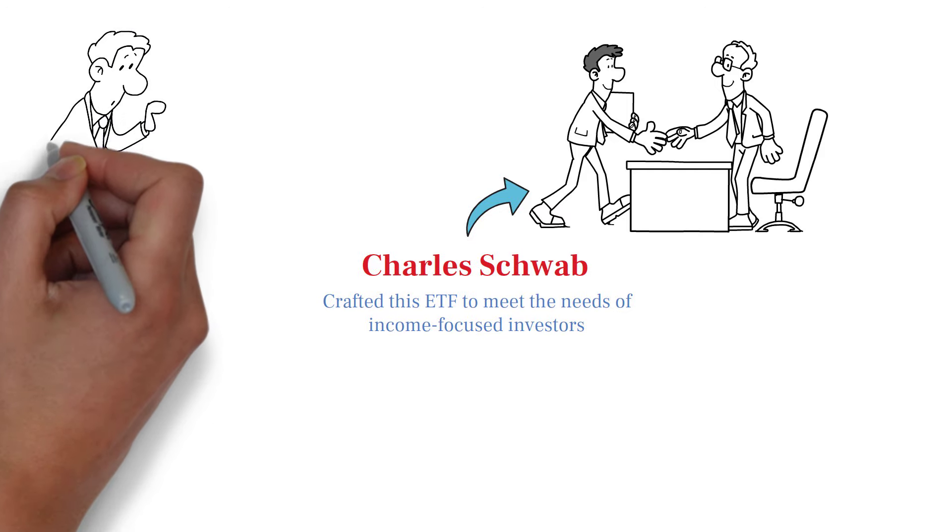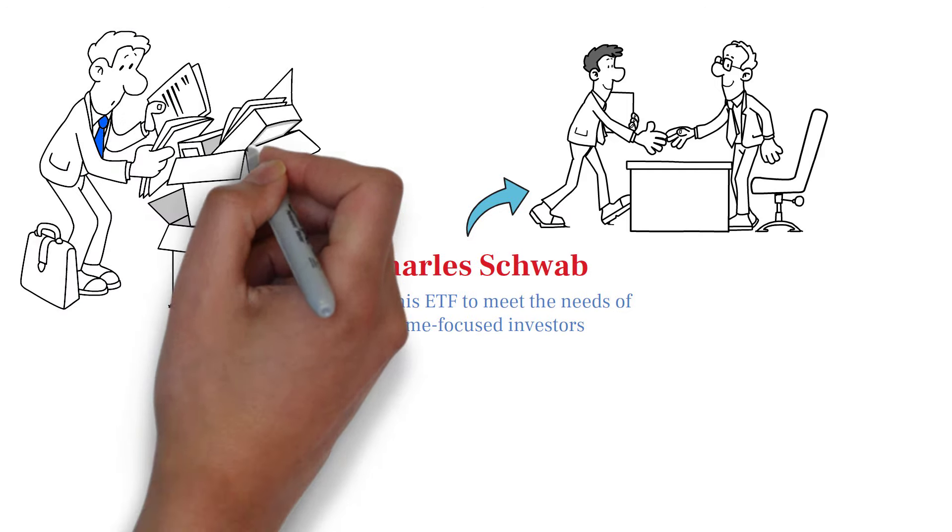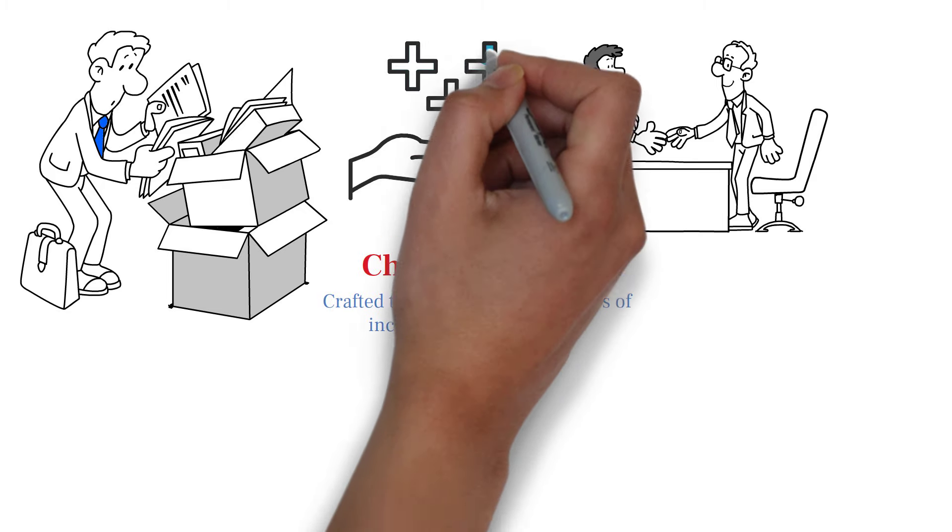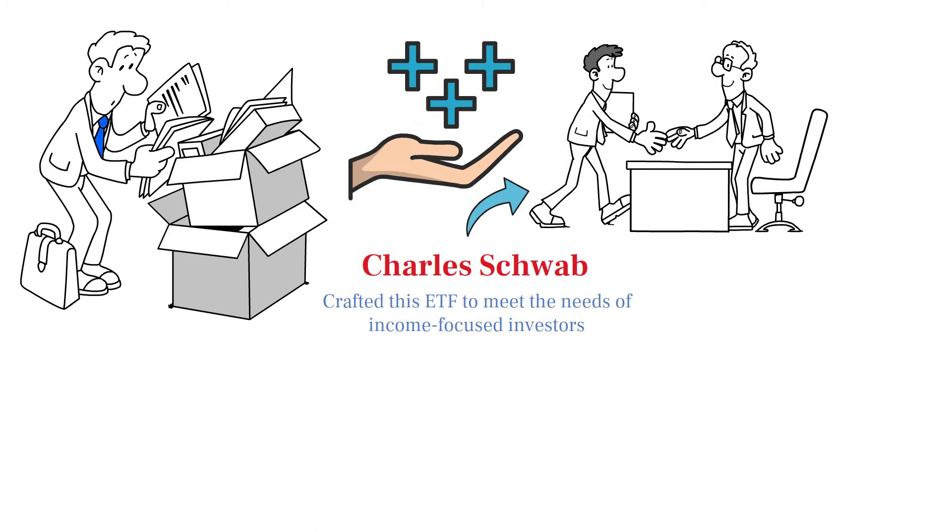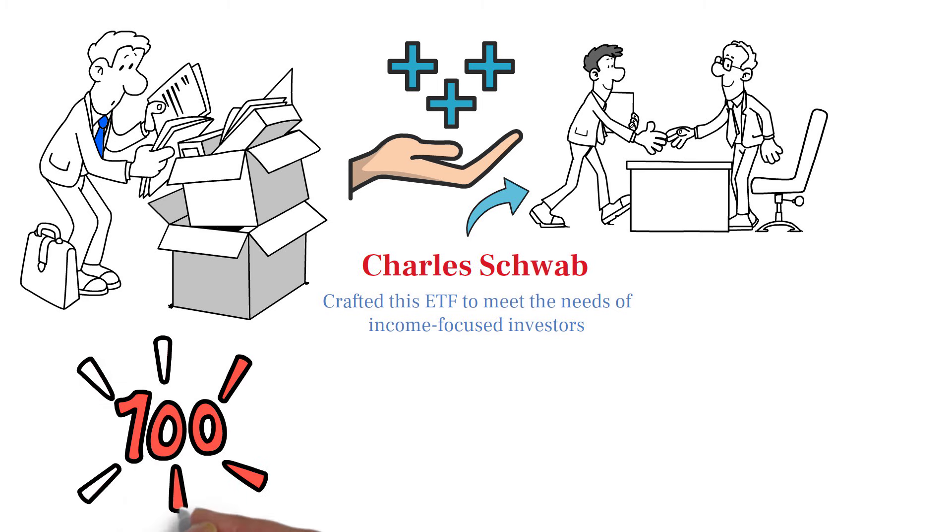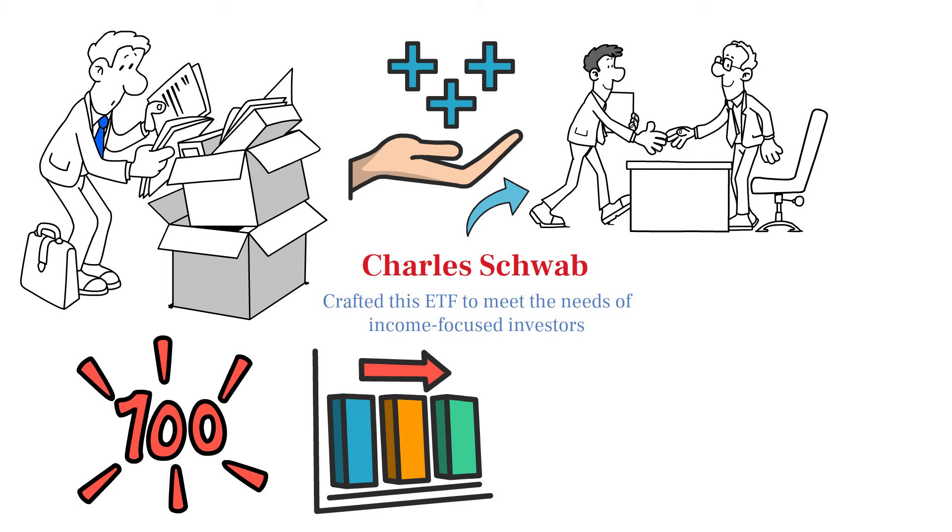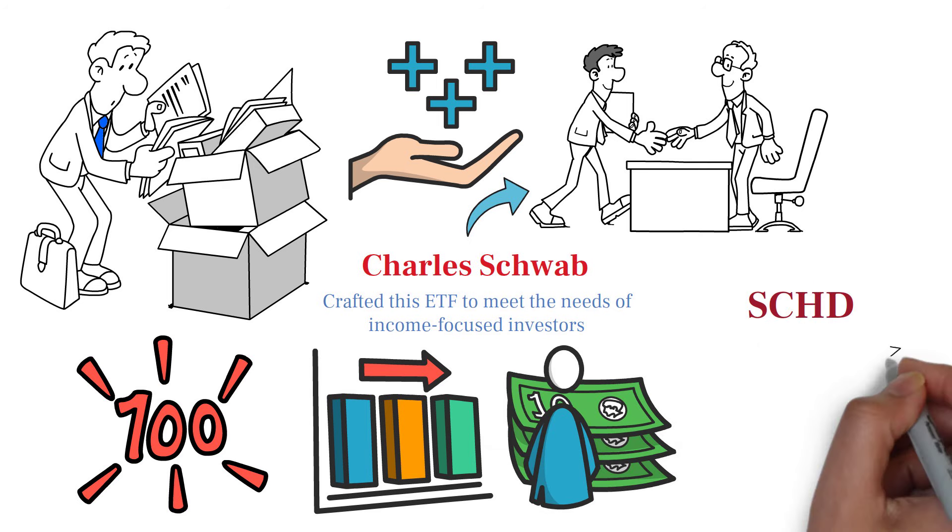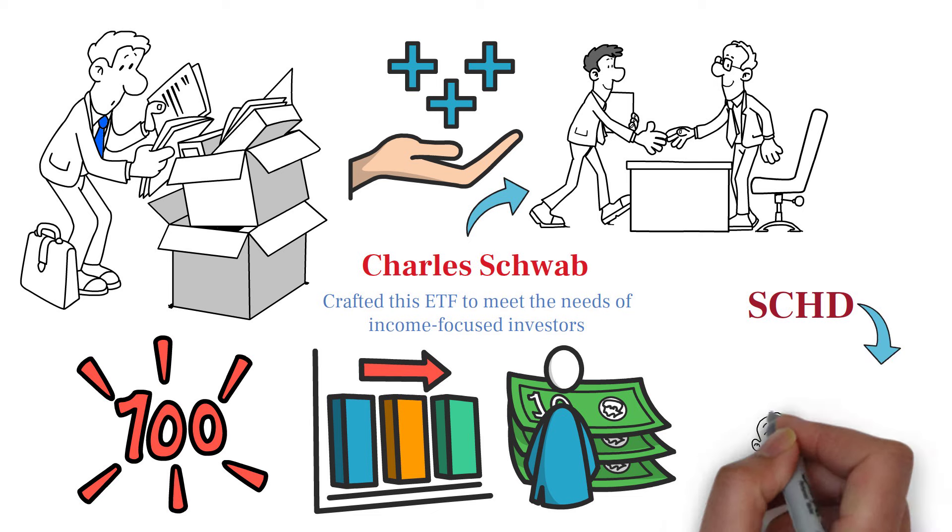SCHD tracks the Dow Jones U.S. Dividend 100 Index, which prioritizes companies with high dividend yields and strong financial health. This index is composed of 100 of the highest-yielding U.S. stocks with a consistent history of dividend payments. By focusing on these financially stable companies, SCHD aims to provide a reliable and growing income stream for its investors.